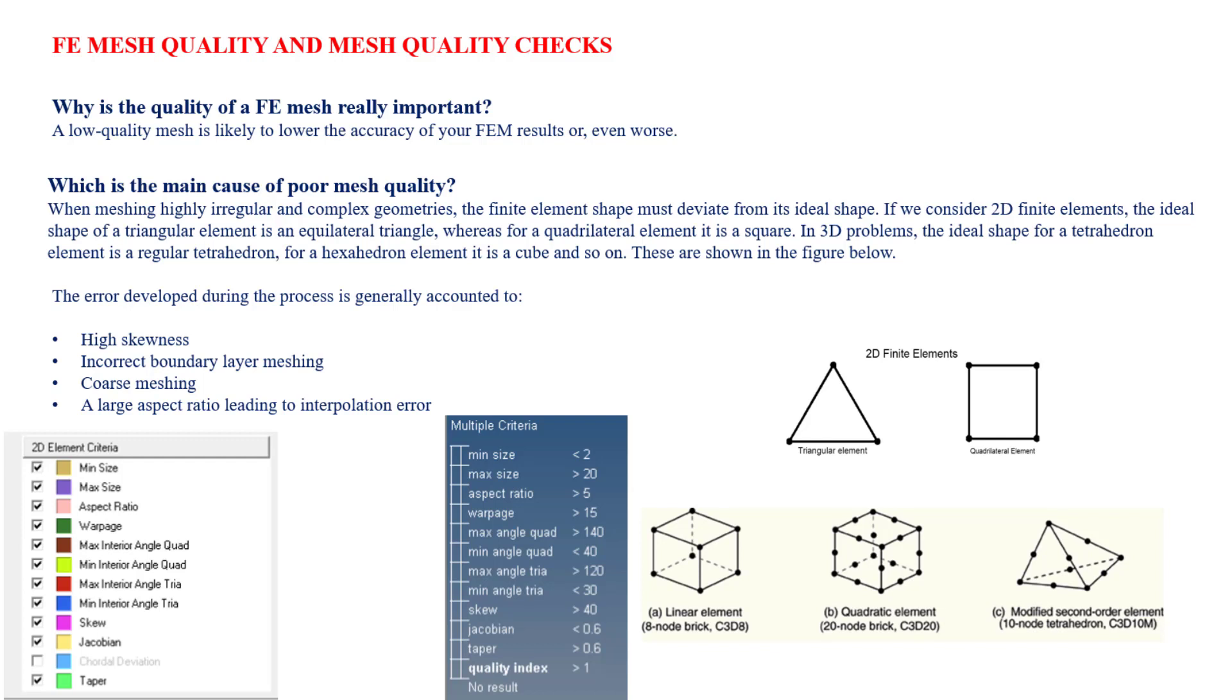What are the common errors? First is high skewness deviation. When it comes to layer boundaries and coarse meshing, these are the errors. High skewness leads to bad mesh quality, and coarse mesh with large aspect ratio leads to interpolation errors.